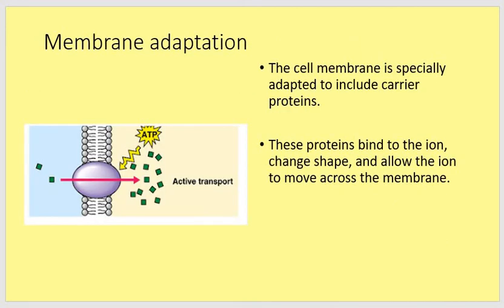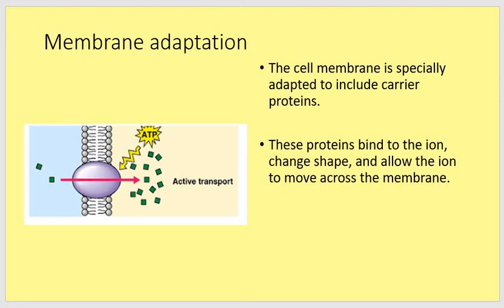As a reminder of active transport: you have a membrane and something called a pump. Protein molecules bind to the ions and move them through the pump using ATP — adenosine triphosphate — which is the chemical that provides the energy for all of this to occur. There is a separate video for this in the active transport lesson if you need a reminder.